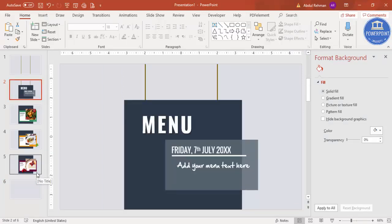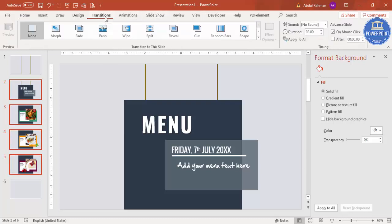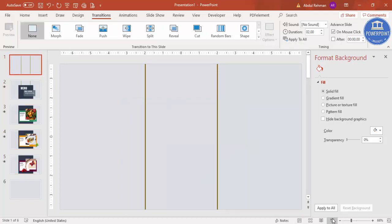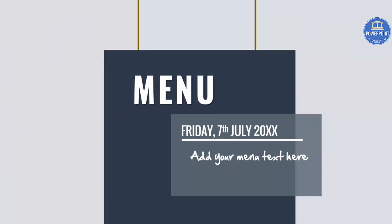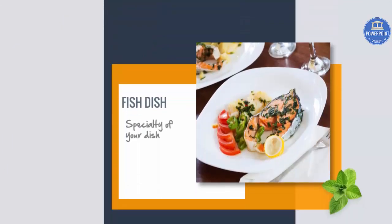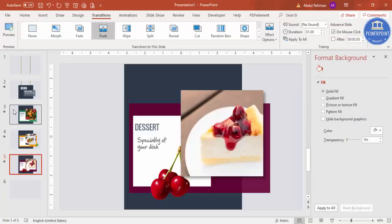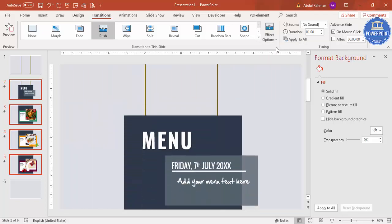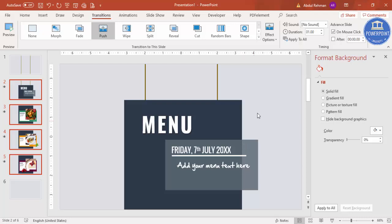Select all slides from the second slide to the last slide, then go to Transitions and select the transition called 'Push'. Set the effect options to 'From Bottom'. When you play it, you can see the first menu slide comes up, then it pushes to the chicken barbecue, then the fish dish, then the dessert. From Bottom looks much more appealing than from the left.